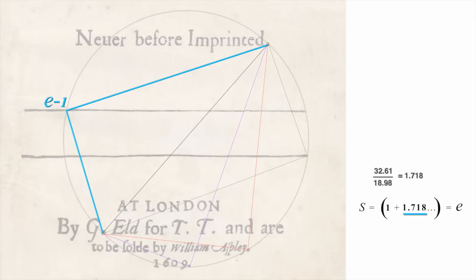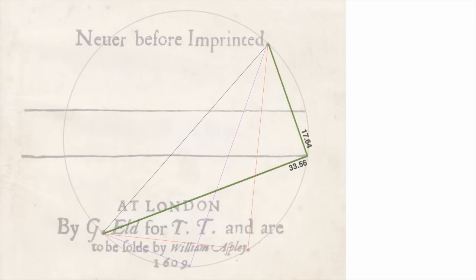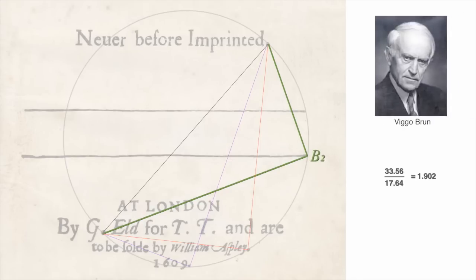Here we have a constant that's pretty much unknown to the mainstream, 1.902. It's called Brun's constant, or B2. It concerns a unique category of prime numbers called twin primes. Enormously important in encryption and internet security. But here again, this important constant wasn't known until 1919. And yet there it is.